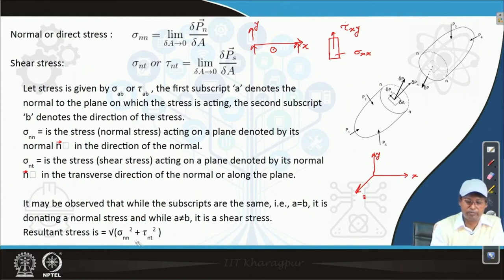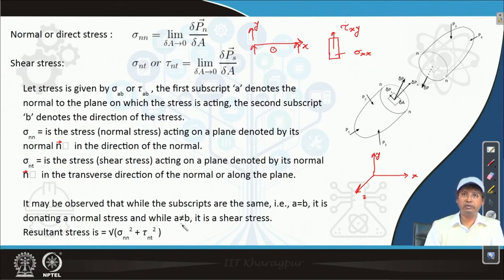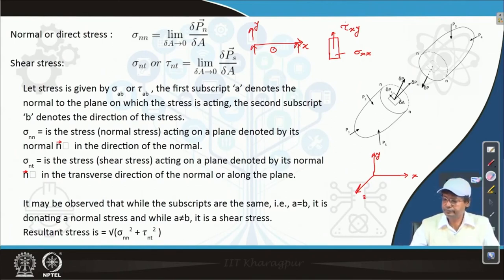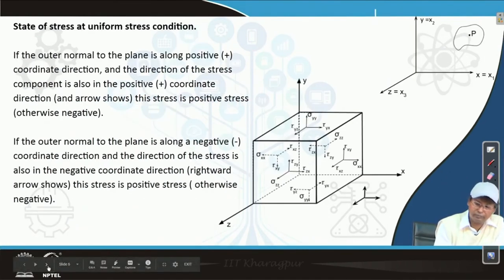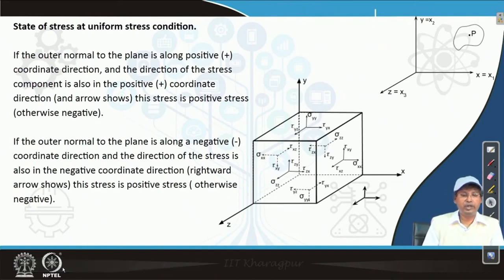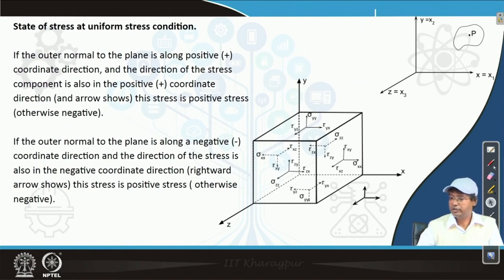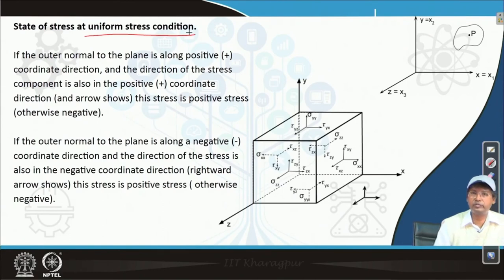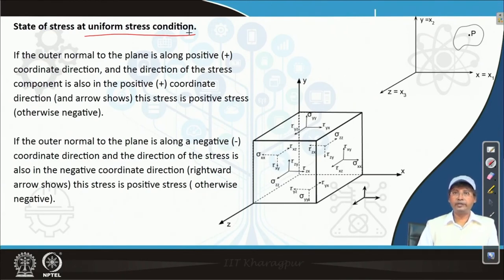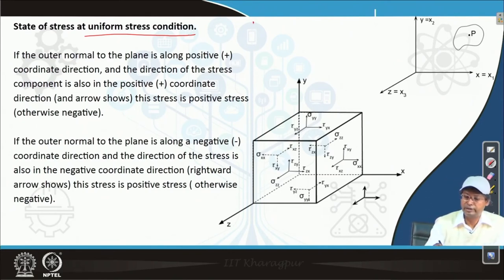The resultant stress, from the vector rule, has amplitude equal to the square root of sigma_nn squared plus tau_nt squared. We now come to the state of stress under uniform stress condition. It is worth noting that a uniform stress condition is difficult to prevail in practical cases.